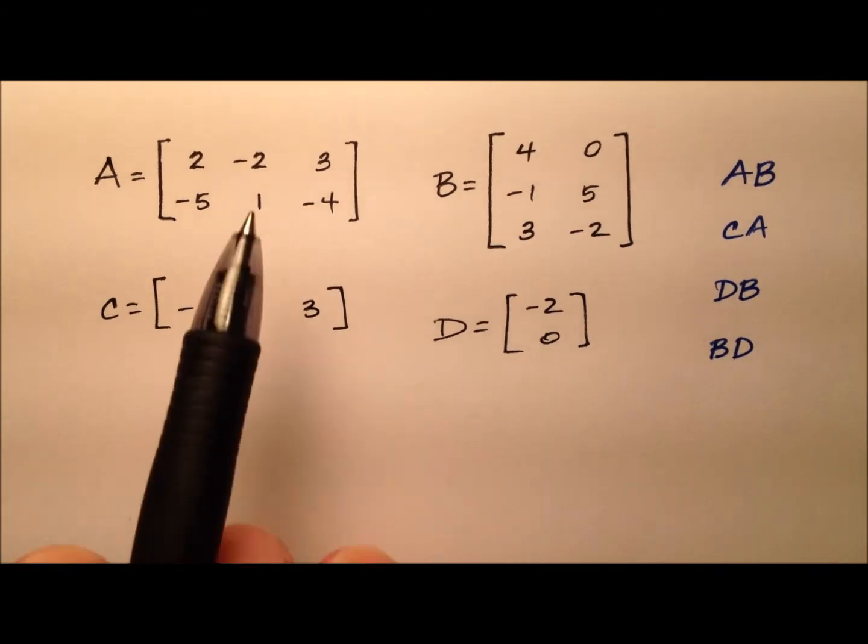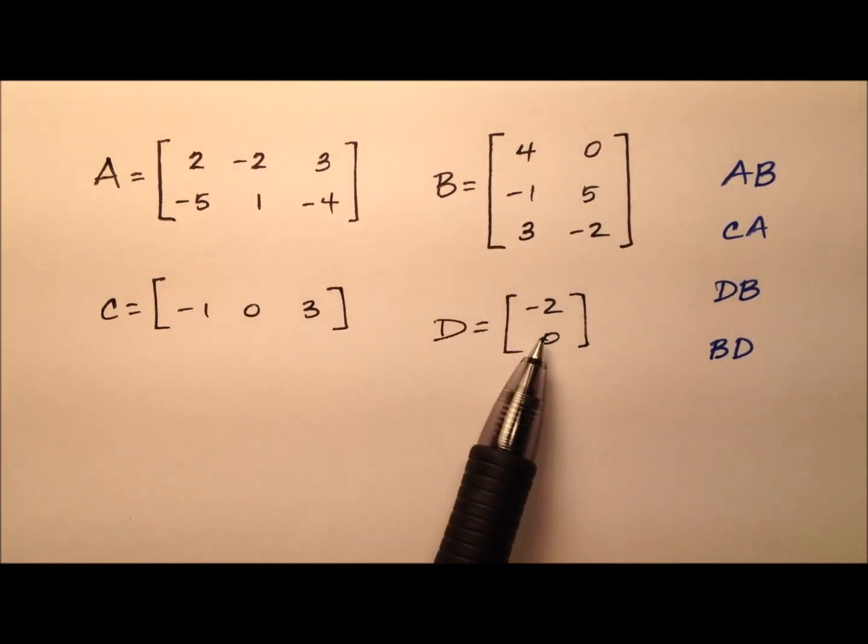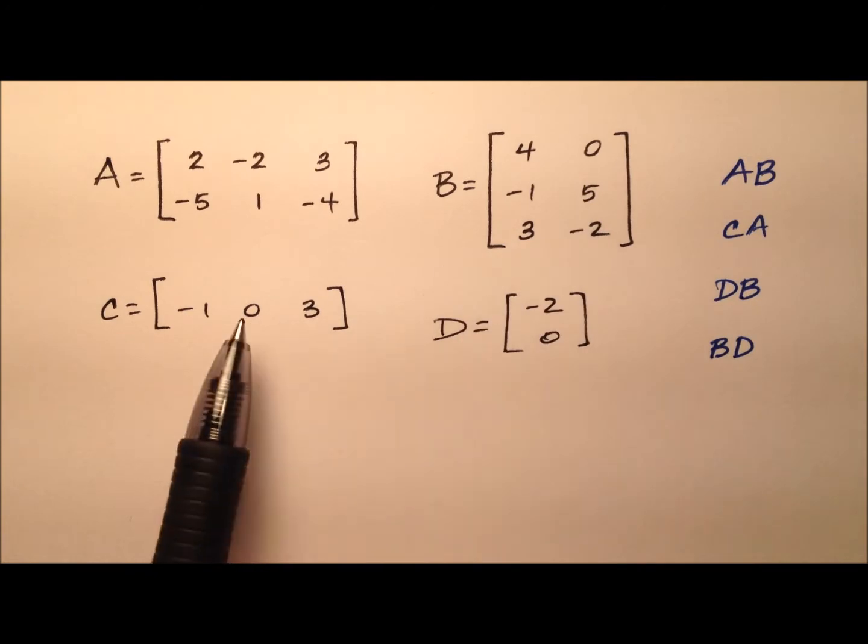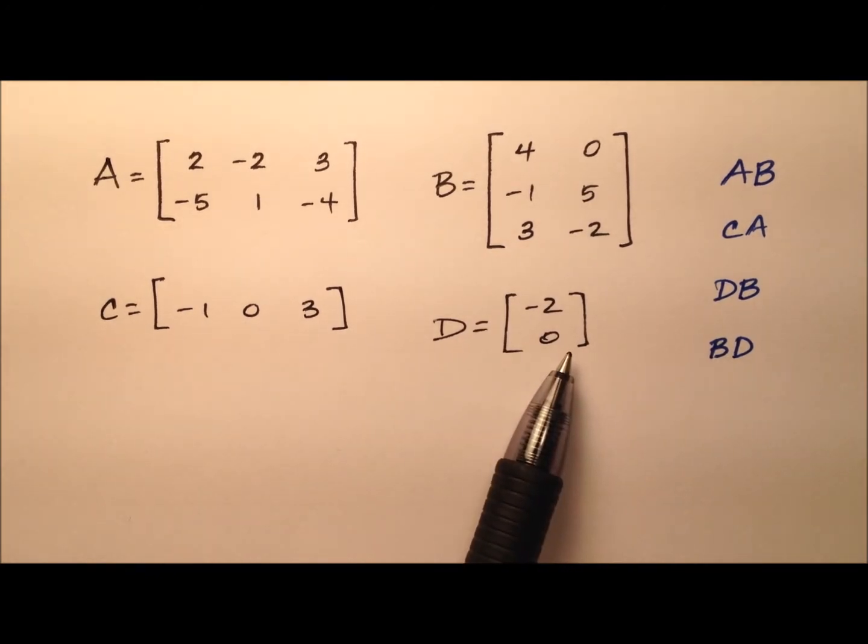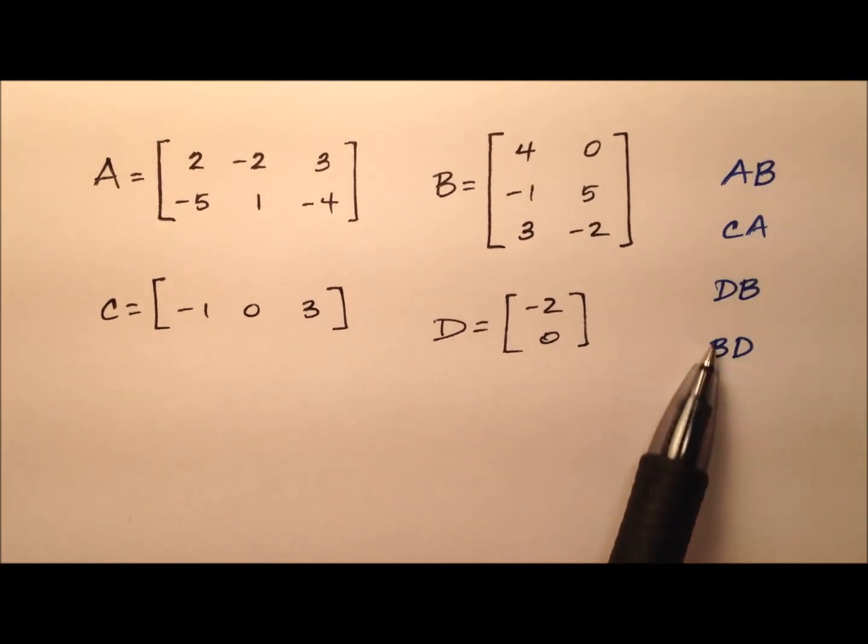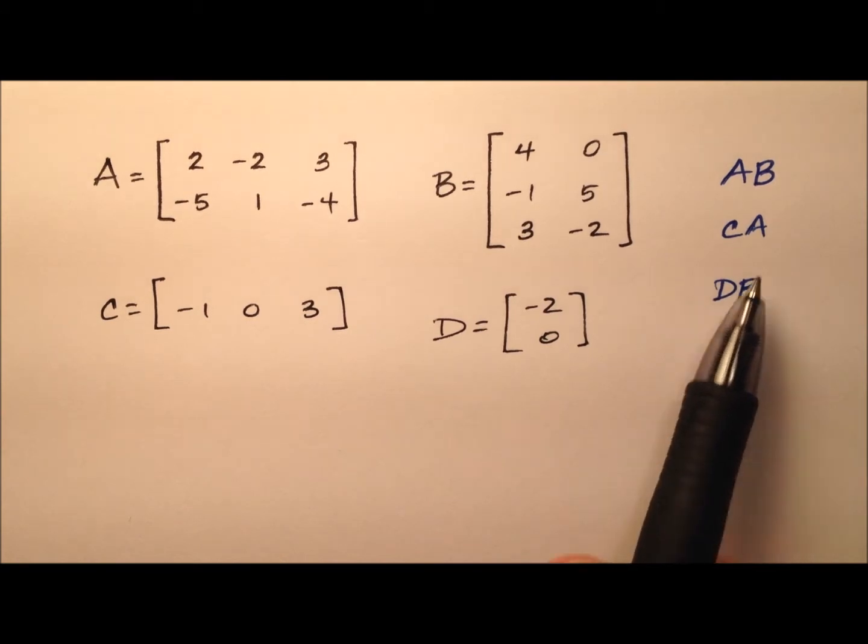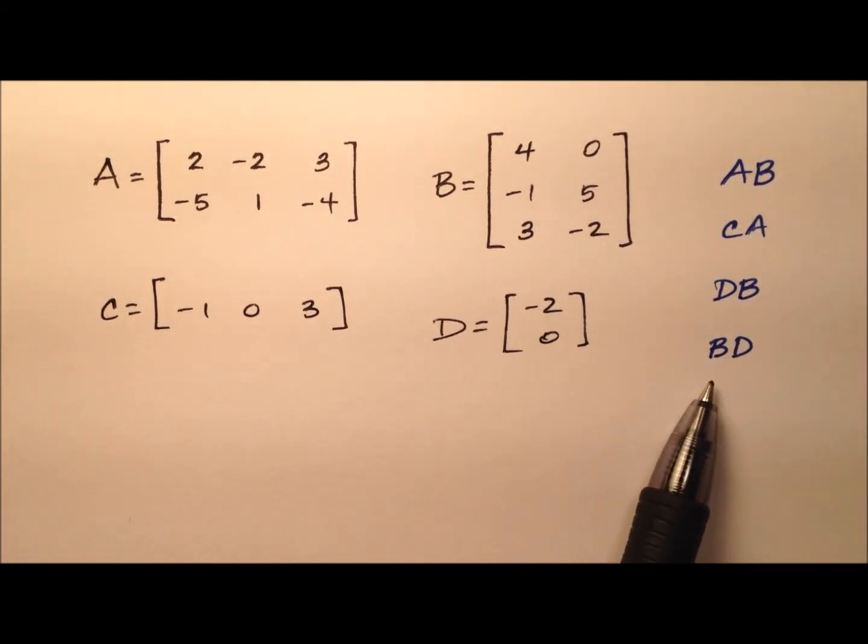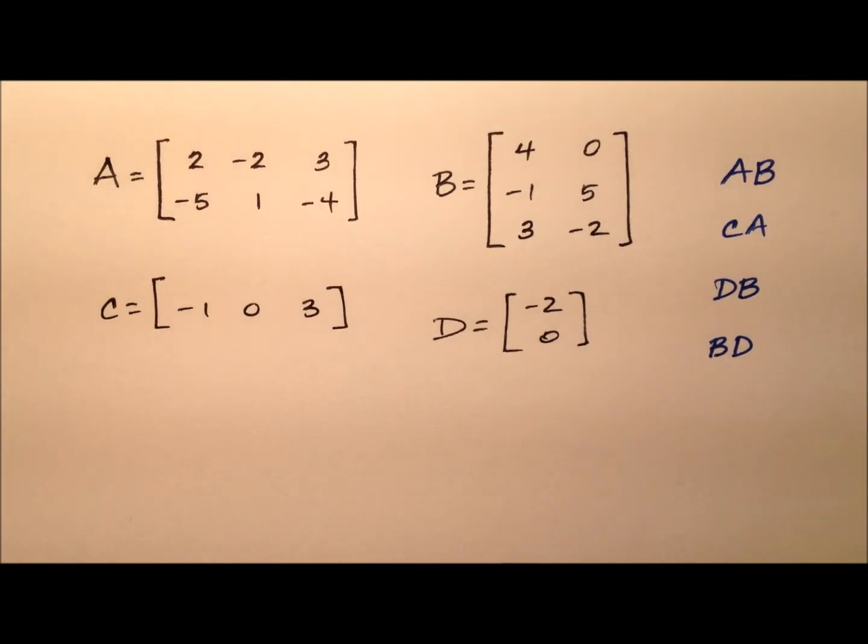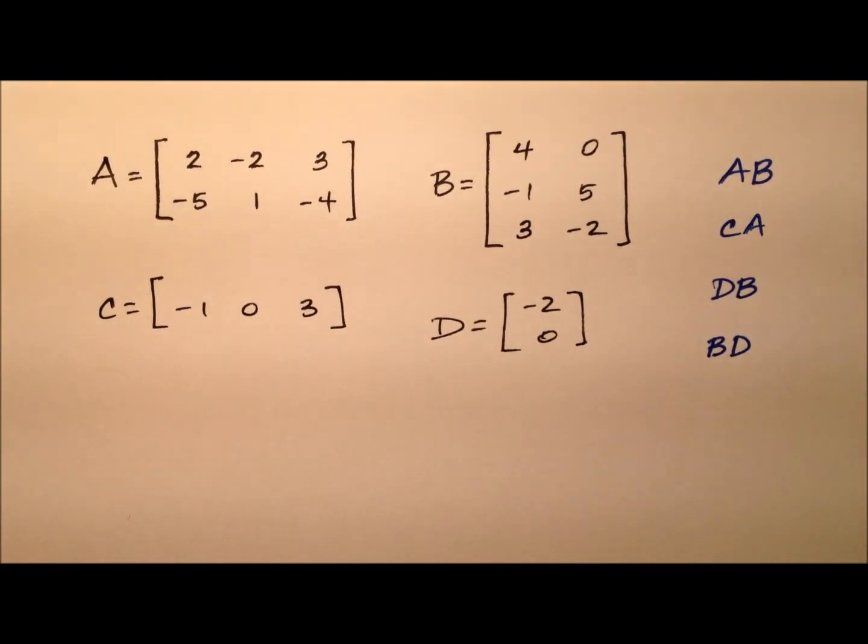In this example, we're given four different matrices here, and each of these matrices has different dimensions. We're also given four products: multiplying A and B together, C and A, D and B, and B and D. We want to try to figure out what the dimensions of each product matrix is going to be, if it's possible or not.